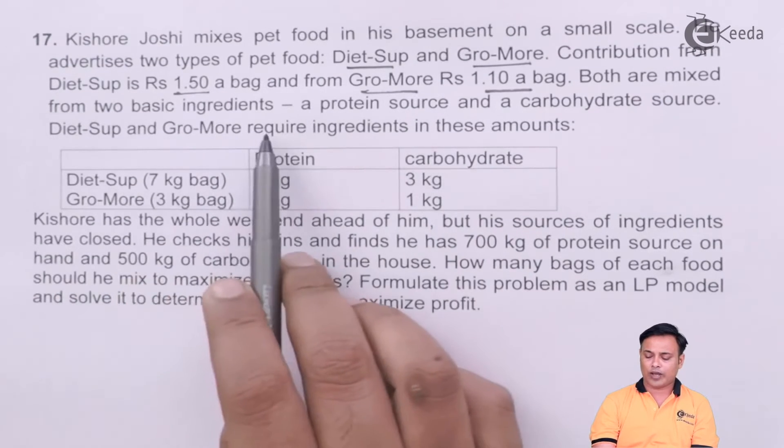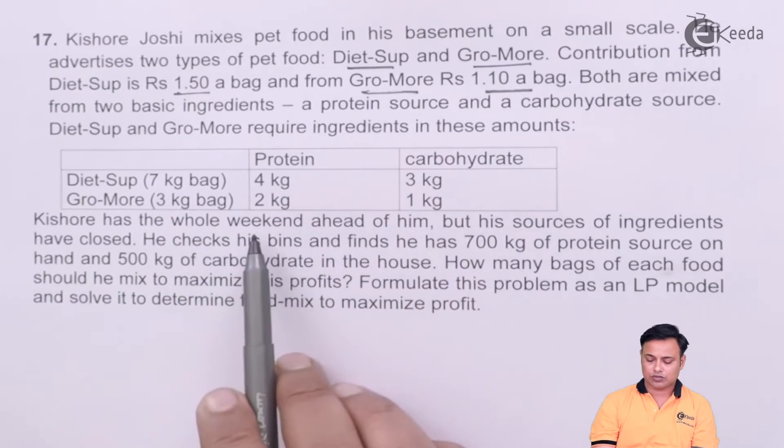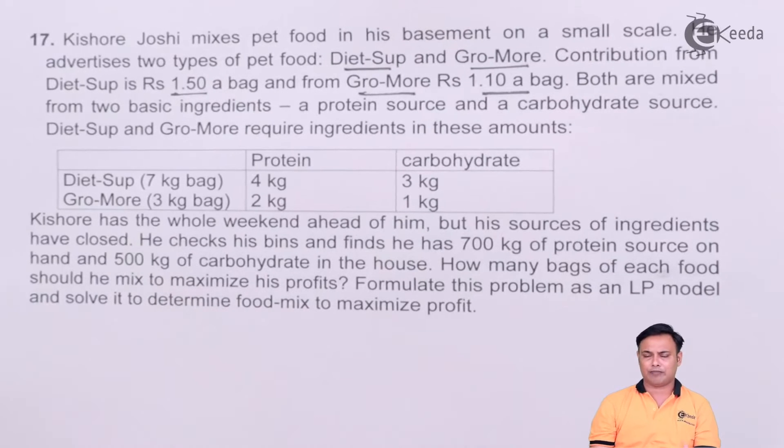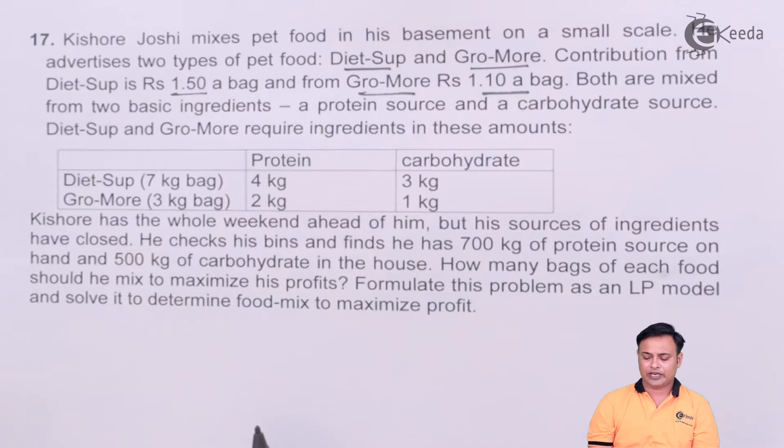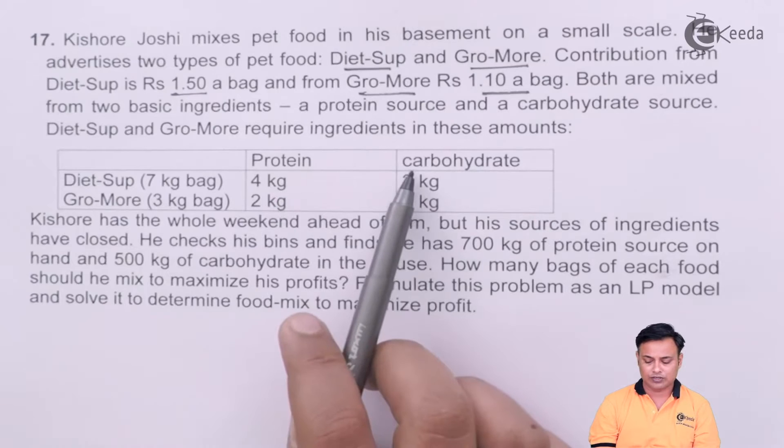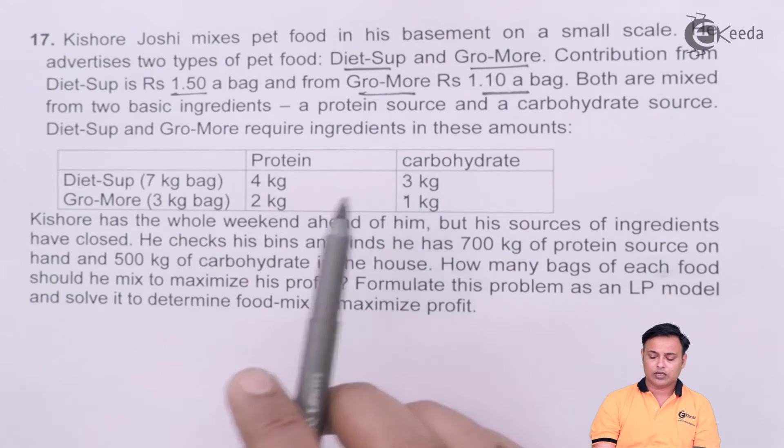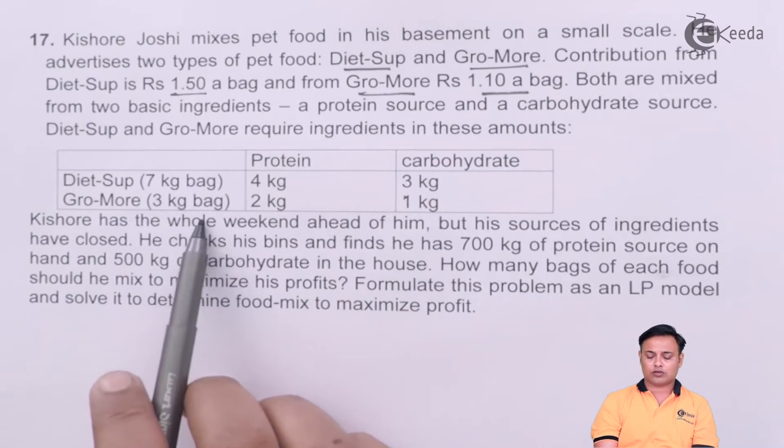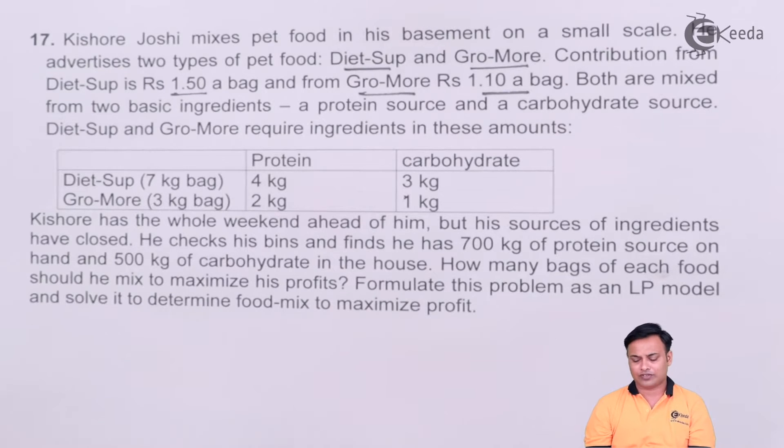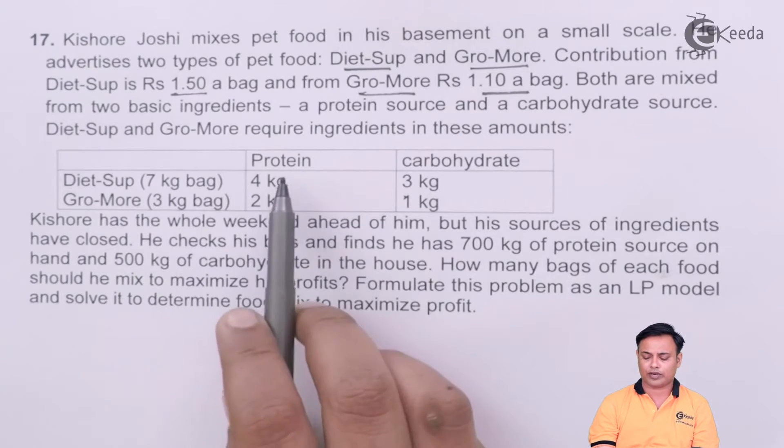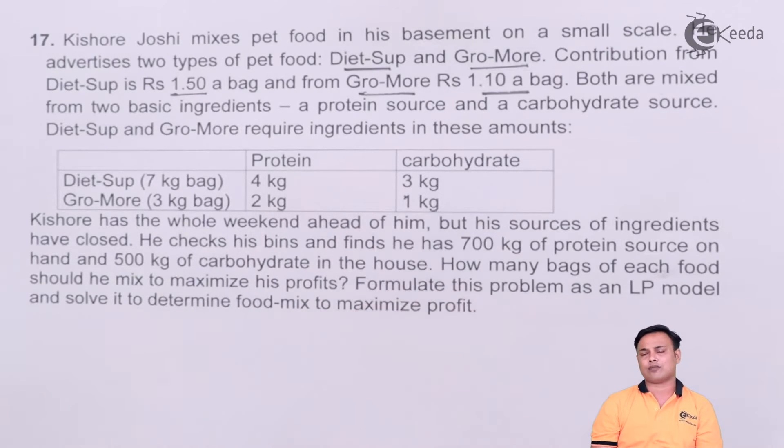Diet-Sup and Gro-More require the ingredients in these amounts. Diet-Sup is a 7 kg bag and it requires 4 kg of protein and 3 kg of carbohydrates. And we have Gro-More, a small 3 kg bag which needs 2 kg of protein and 1 kg of carbohydrates.